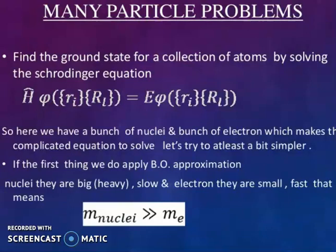Many particle problems: find the ground state for a collection of atoms by solving this particular equation: H phi(r1...rn) equals E phi(r1...rn). We have a bunch of nuclei and bunch of electrons, which makes the complicated equation to solve. Let's try to make it at least a bit simpler. The first thing we do is apply Born-Oppenheimer approximation, in short BO approximation.